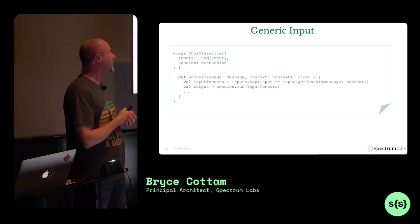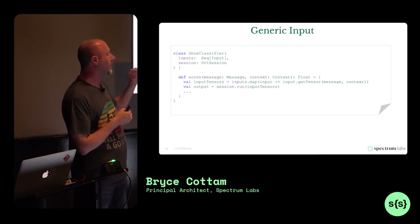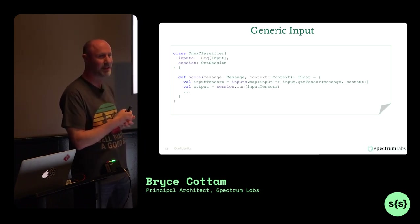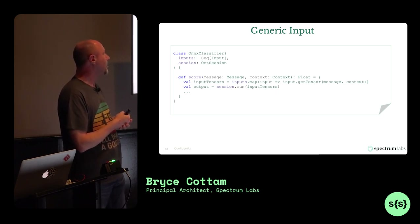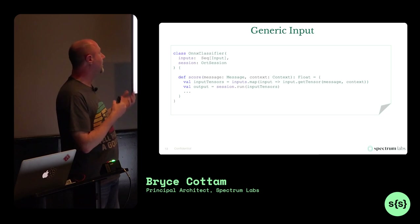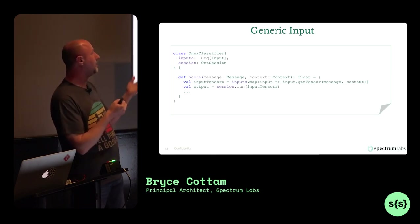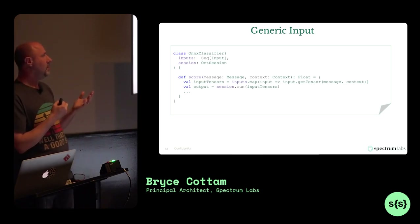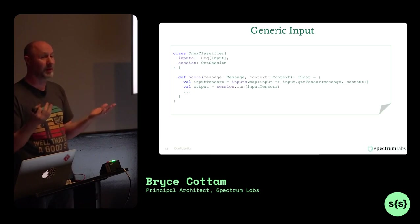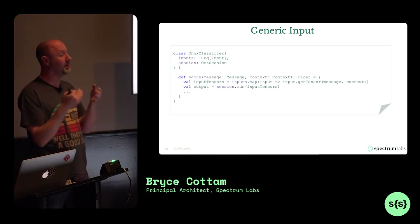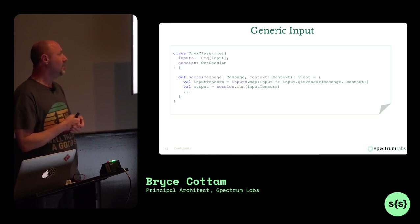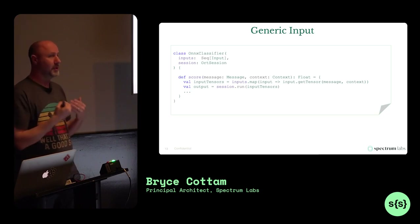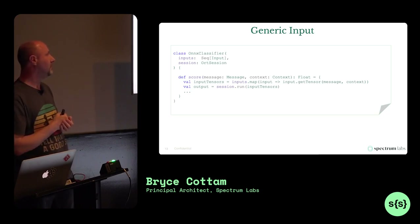When we established this naming pattern and handoff convention between data science and engineering, we had about five or six classifiers. We now have 20, and this code has hardly changed at all. Positive behaviors is a good example — we created a totally new paradigm, looking for positive rather than toxic behaviors, and nobody needed to change any code to run them. They follow the same pattern, pull from the same domain model, and run in the same place.